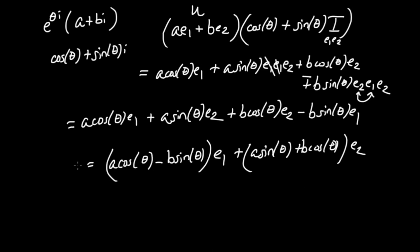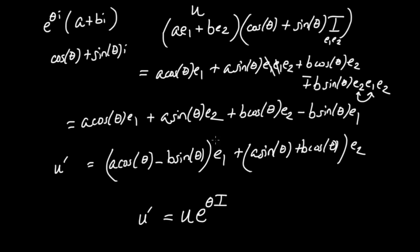This newly rotated vector u′ has exactly the same coefficients as the complex number rotation formula — (A cos θ − B sin θ) for the first component and (A sin θ + B cos θ) for the second. The conceptual difference is that the thing doing the rotating is a scalar plus a bivector: u times e^(θI) equals the rotated vector u′. So the thing doing the rotating is the exponential of a bivector.